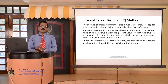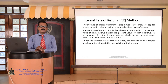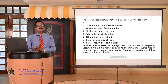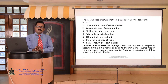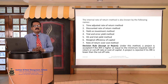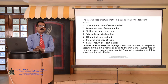Under the Internal Rate of Return Method, the cash flows of a project are discounted at a suitable rate by hit and trial method. Since the discount rate is determined internally, this method is called the Internal Rate of Return Method. This method is known by many names such as Time Adjusted Rate of Return Method, Discounted Rate of Return Method, Yield on Investment Method, Trial and Error Yield Method, Hit and Trial Yield Method, Marginal Efficiency or Productivity of Capital Method, and Rate of Return over Cost Method.